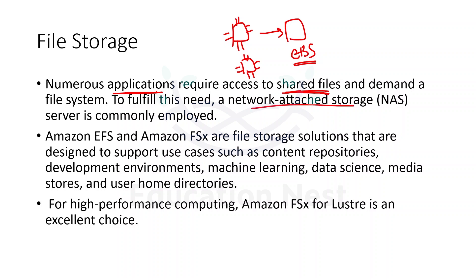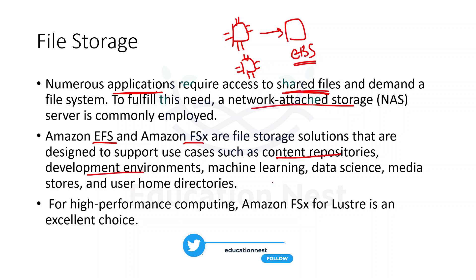Network Attached Storage (NAS) is commonly employed for file storage. On AWS, we have EFS (Elastic File Storage) and Amazon FSx as file storage solutions. These support use cases such as content repositories where multiple EC2 instances want to access shared content. They can also be used in development environments for machine learning, data science, media stores, or user home directories.